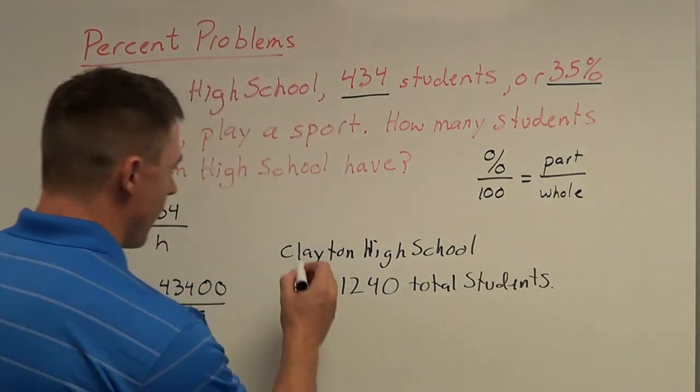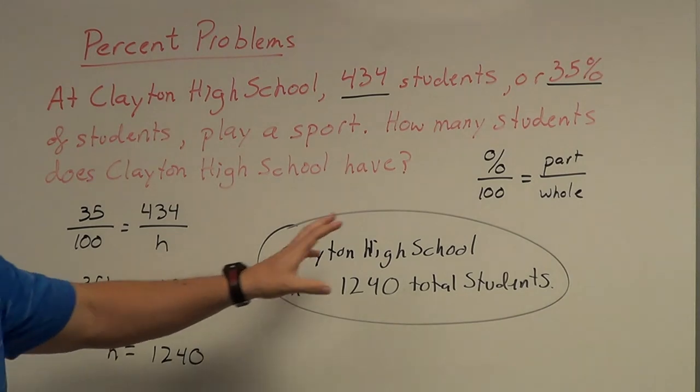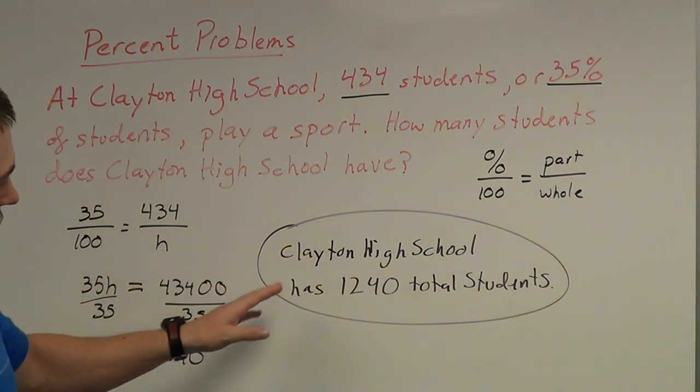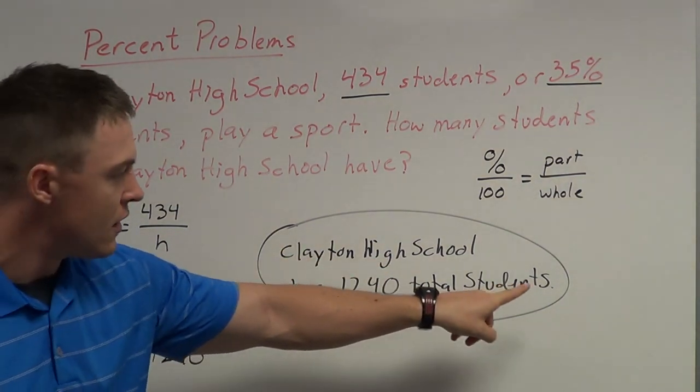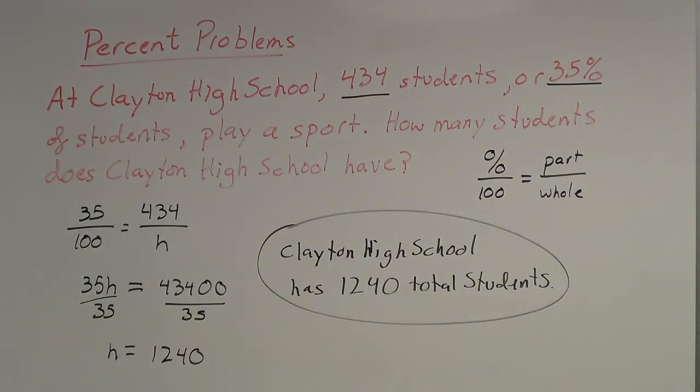And I'm being very precise there. I'm saying Clayton High School, because that's the school I'm talking about, has 1,240 total students. I use that extra total word there to make sure that whoever is reading this knows exactly what that means. That's the total number of students that go to that high school.